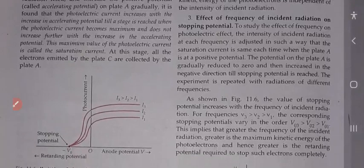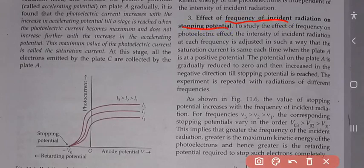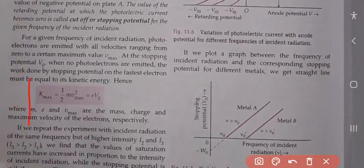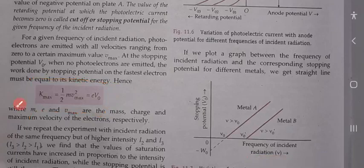Now the third topic is: effect of frequency of incident radiation on stopping potential. In this video we have to see the relation between kinetic energy and stopping potential. Maximum KE = ½mv²_max = eV₀, where V₀ is the stopping potential and e is the charge on one electron.